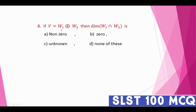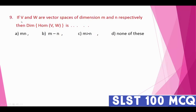Question number eight: if V equals W1 plus W2, then the dimension of W1 intersection W2 is — the correct answer is zero.